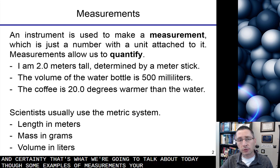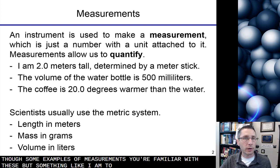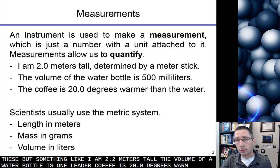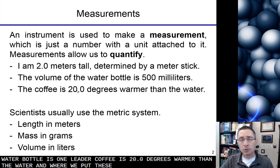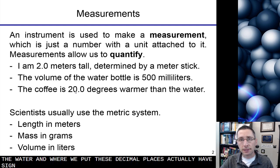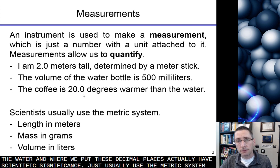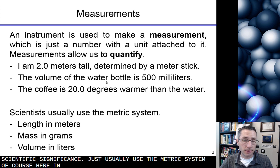So some examples of measurements you're familiar with, something like I am 2.2 meters tall. The volume of a water bottle is 1 liter. Coffee is 20.0 degrees warmer than the water. And where we put these decimal places actually have scientific significance. Scientists usually use the metric system, of course. Here in America we don't, but most of the world does.